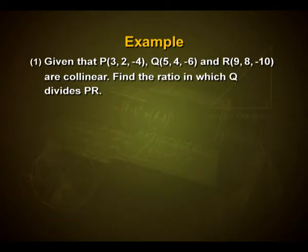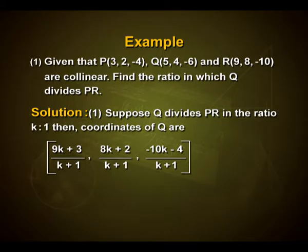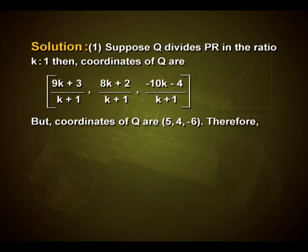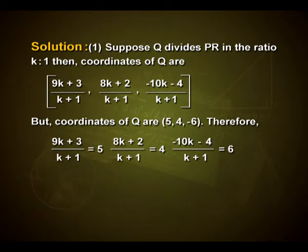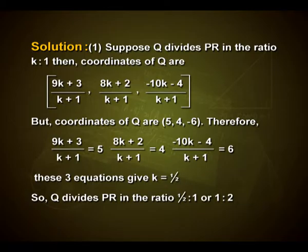Given that P(3, 2, −4), Q(5, 4, −6), and R(9, 8, −10) are collinear, find the ratio in which Q divides PR. Suppose Q divides PR in the ratio k : 1. Then coordinates of Q are (9k+3)/(k+1), (8k+2)/(k+1), (−10k−4)/(k+1). But coordinates of Q are (5, 4, −6). Equating gives k = 1/2, so Q divides PR in the ratio 1 : 2.